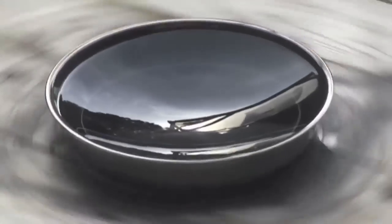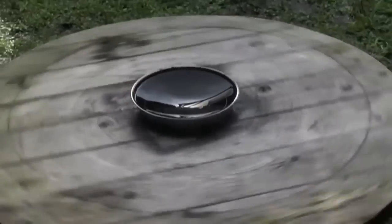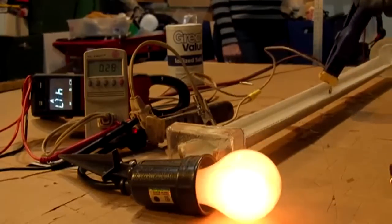In previous videos we showed you how spinning liquids form a parabola similar to liquid mirrored telescopes. We also showed you a homemade rheostat that allows for effective voltage controlling.